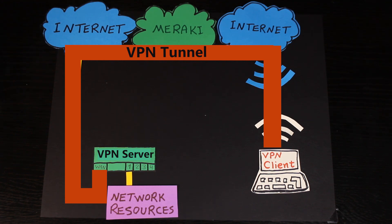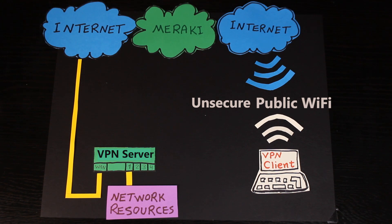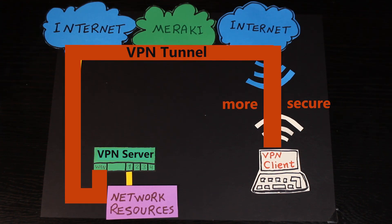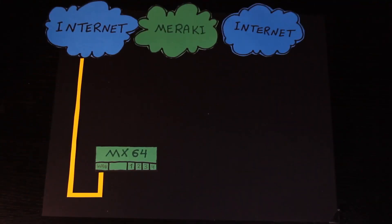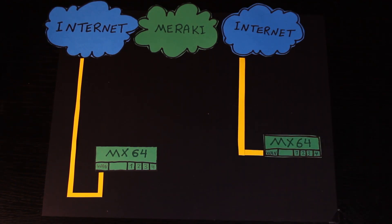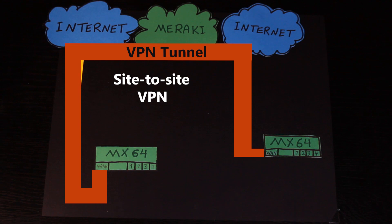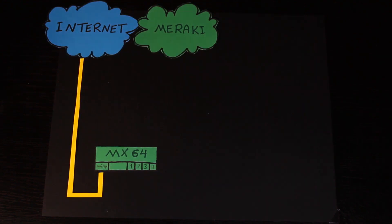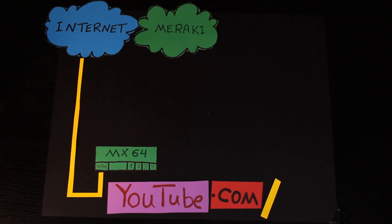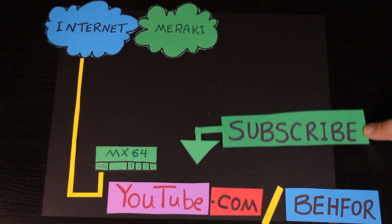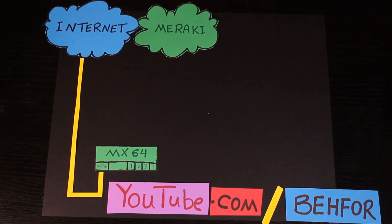For example, if you're using an unsecure public Wi-Fi, you can use a VPN connection to make your internet connection more secure. Before we get to the client VPN, I wanted to point out that there is another type of VPN called site-to-site VPN, which we're going to talk about later in another video. If you are interested, please subscribe and activate the bell notification so you would know as soon as the next video is ready.